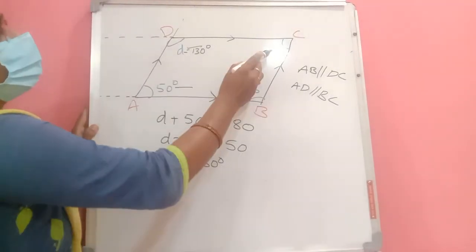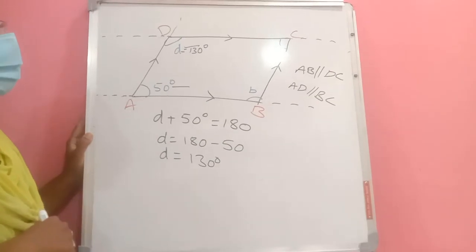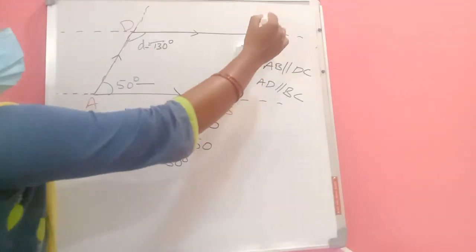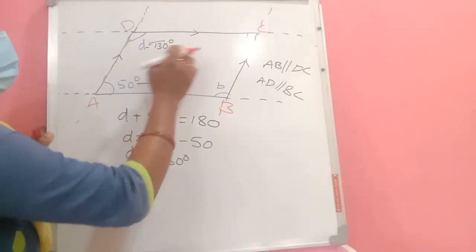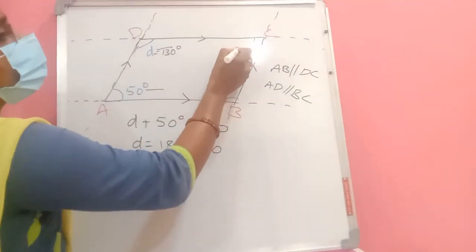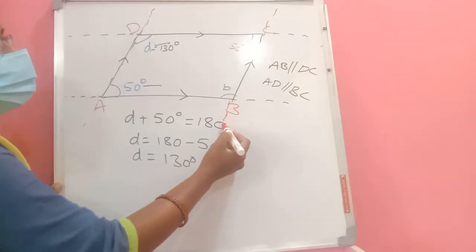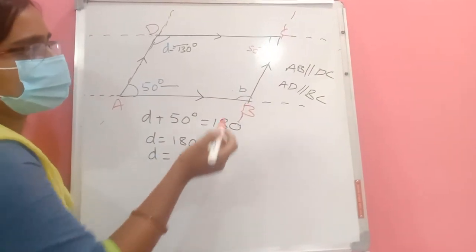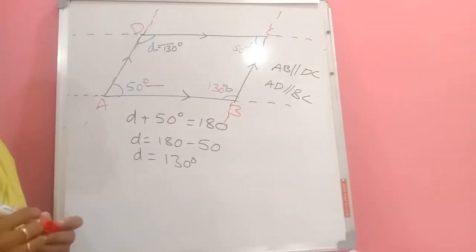For angle C: taking AD and BC as parallel lines with DC as the transversal, angle C and angle D are interior angles on the same side of the transversal. Their sum equals 180 degrees: 130 + 50 = 180. If we know one angle, we can find all angles using transversal properties.